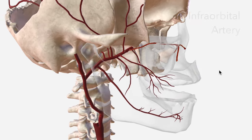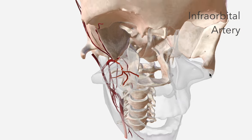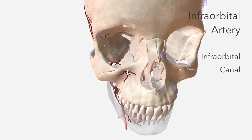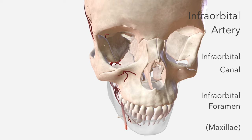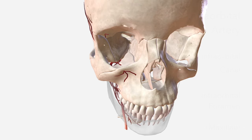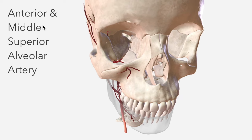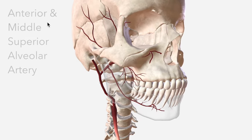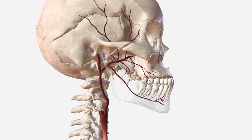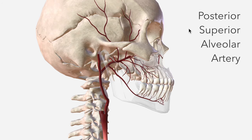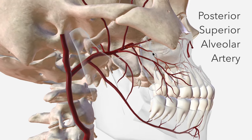We then have the infraorbital artery, passing through the infraorbital canal and emerging from the infraorbital foramen. It gives off two further branches: the anterior and middle superior alveolar arteries, which aren't included in this model. The next branch from the maxillary artery proper is the posterior superior alveolar artery, which — making the maxilla transparent — we can see supplying the maxillary teeth.